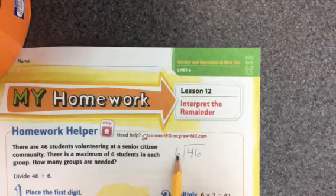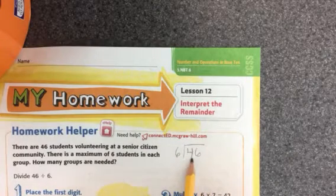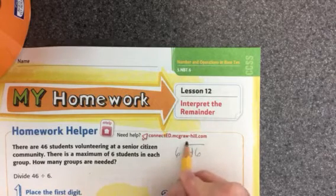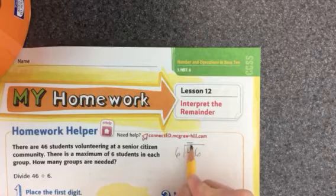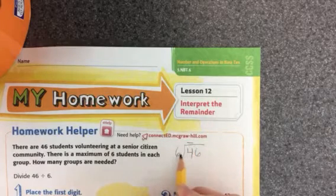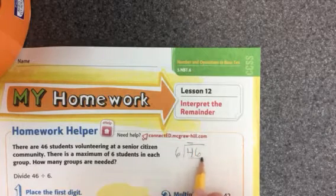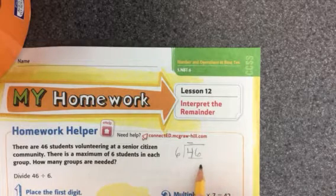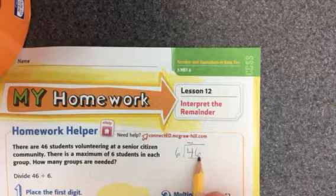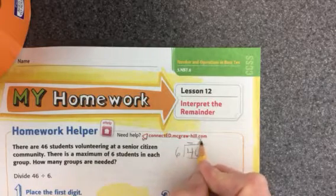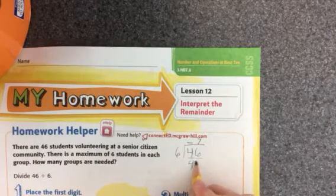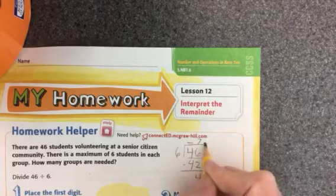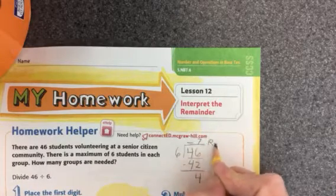Here's my divisor. I'm going to ask myself how many times does 6 go into 4? 6 is bigger than 4 so it can't go into 4, so I can put a space holder right here. Then I'll look at both numbers — 6 goes into 46 how many times? I know 6 times 8 is 48 but that's too big, so I'm going to go 7. 6 times 7 is 42. When I subtract I get 4, so I have 7 with a remainder of 4.